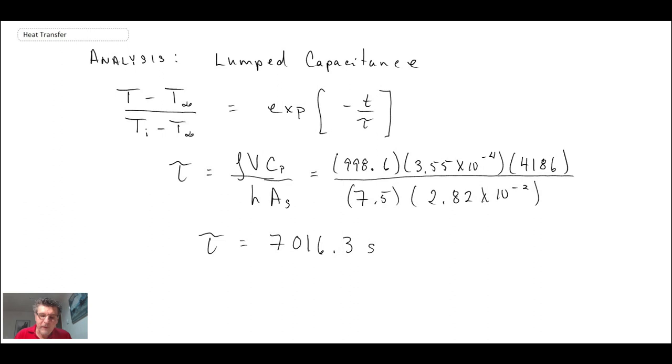The thermal time constant works out to be 7,016.3 seconds. We can plug that back into the equation, and since we know everything on the left-hand side, we can solve for t—how long it takes for the soda pop to reach 15°C.